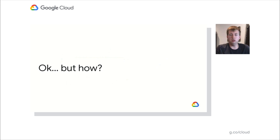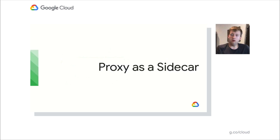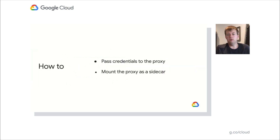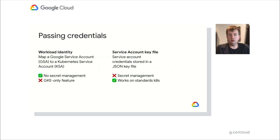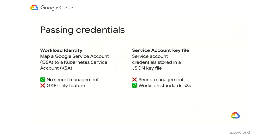So you're convinced you want to use the Cloud SQL proxy in the sidecar — but how? Let's talk about deploying the proxy as a sidecar. There are two different things you need to think about. First, you need to decide how to pass credentials into the proxy. Once you've decided that, you just have to mount the proxy as a sidecar onto an existing application. When passing credentials, you have two choices: the first is workload identity, where you map a Google service account (GSA) to a Kubernetes service account (KSA). The advantage is you don't have to worry about managing any secrets, but it is a GKE-only feature. If you're not using a GKE cluster, you can still use a service account key file — credentials stored in a JSON key file — though you have to worry about keeping track of and rotating that file.